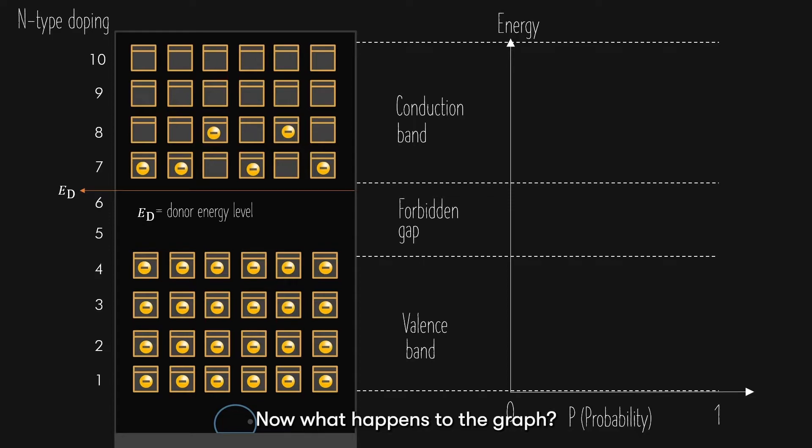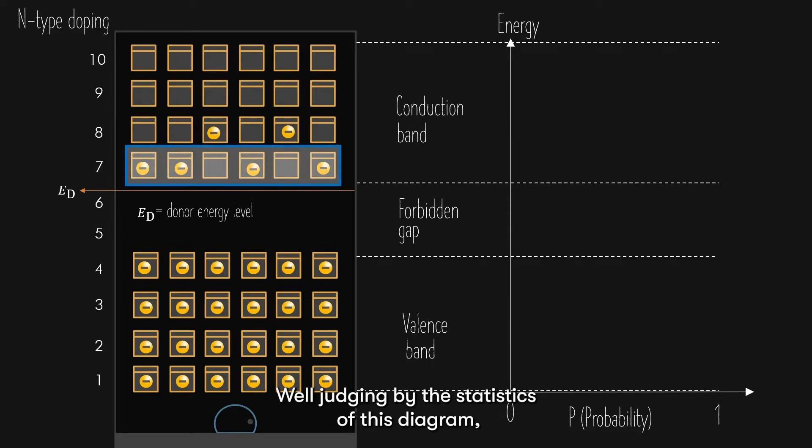Now, what happens to the graph? Well, let us ask the same question again. What is the probability of an electron to exist at any unit in the 7th floor? Well, judging by the statistics of this diagram, we have 4 electrons occupying 6 units on the 7th floor. I would say the probability is about 4 over 6.